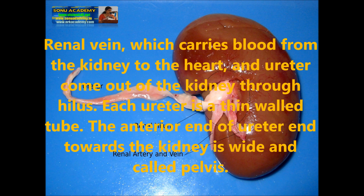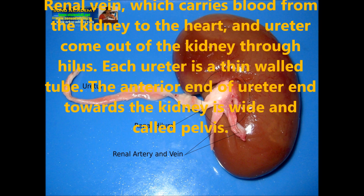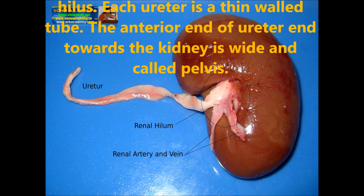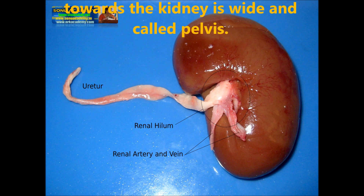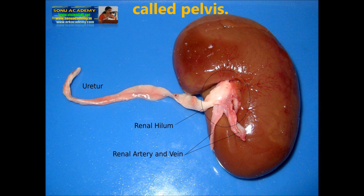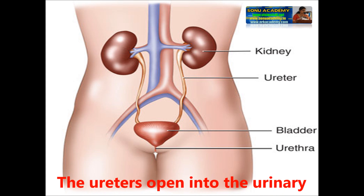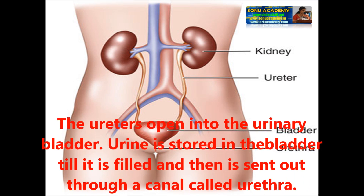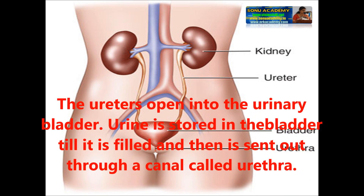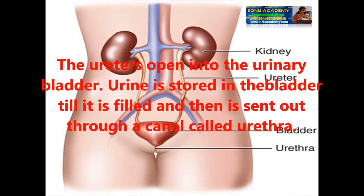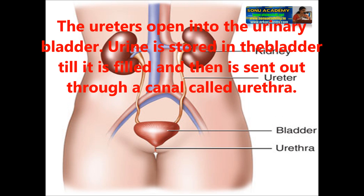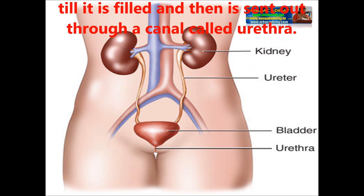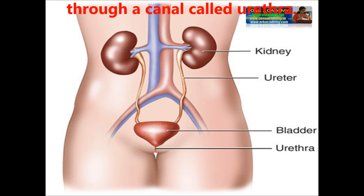Each ureter is a thin-walled tube and the anterior end of the ureter is a wide end called the pelvis. The ureter opens into the urinary bladder, where urine is stored in the bladder until it is filled, and then it is sent out through a canal called the urethra.